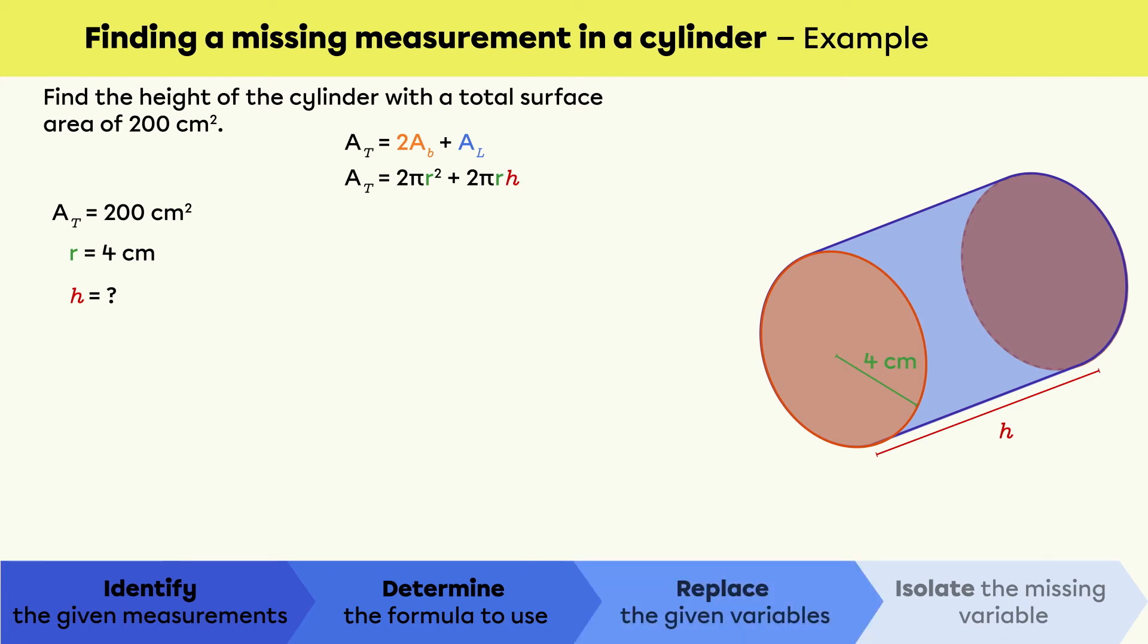Next, replace the variables in the formula with the values given in the problem. The total area of this cylinder is 200, so we can replace AT with 200. Since we know the measurement of the radius, we replace all the r's with 4.